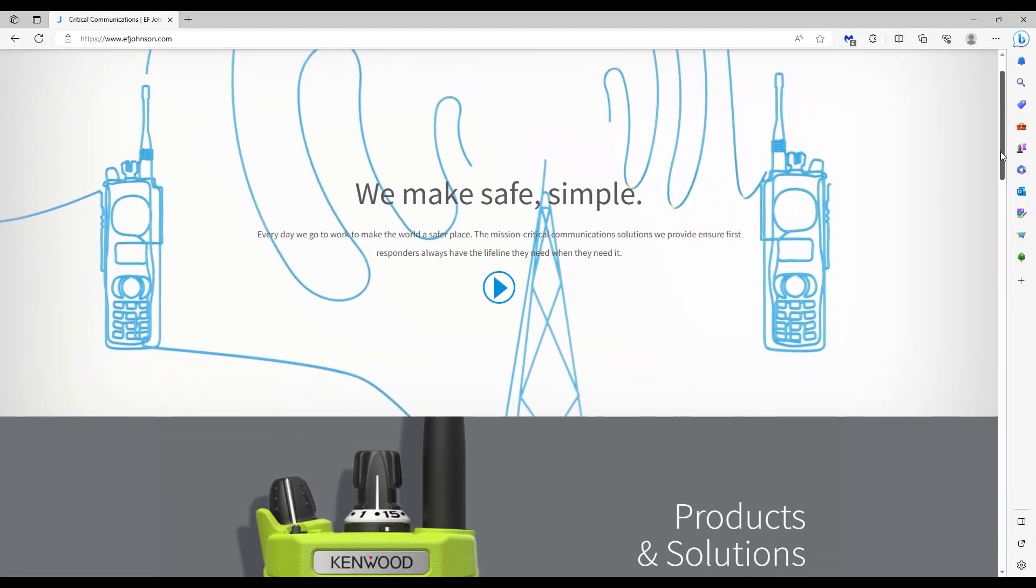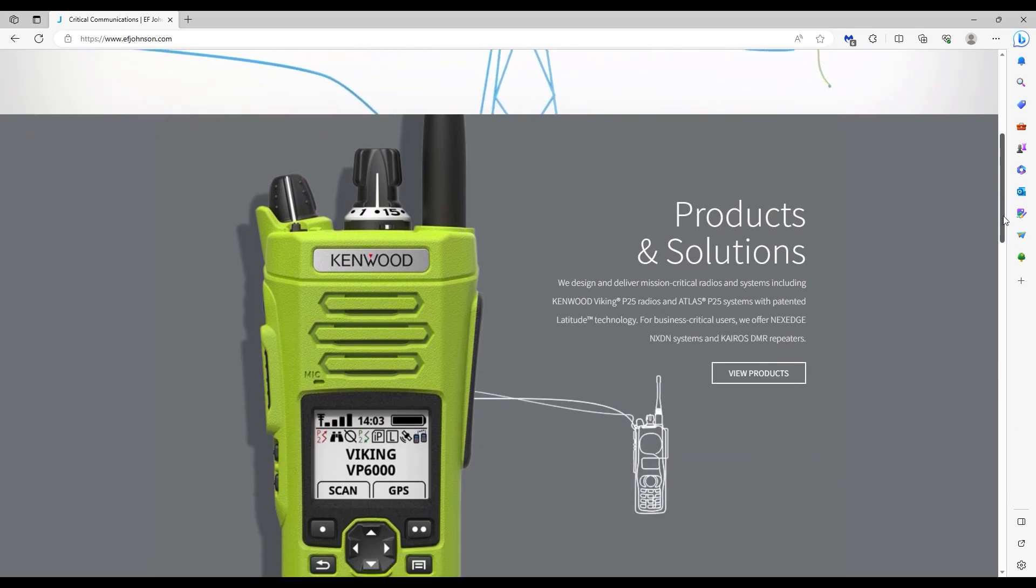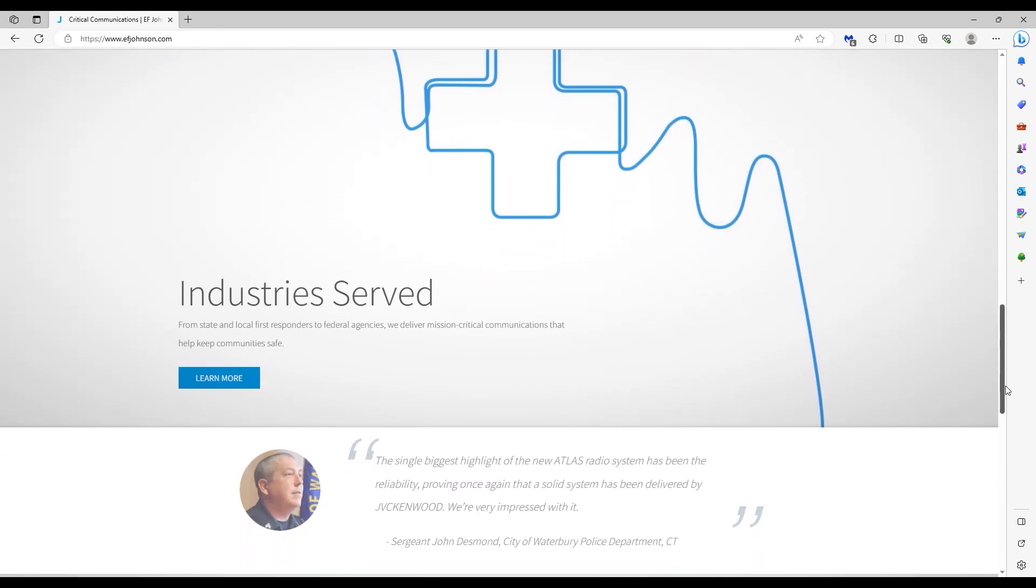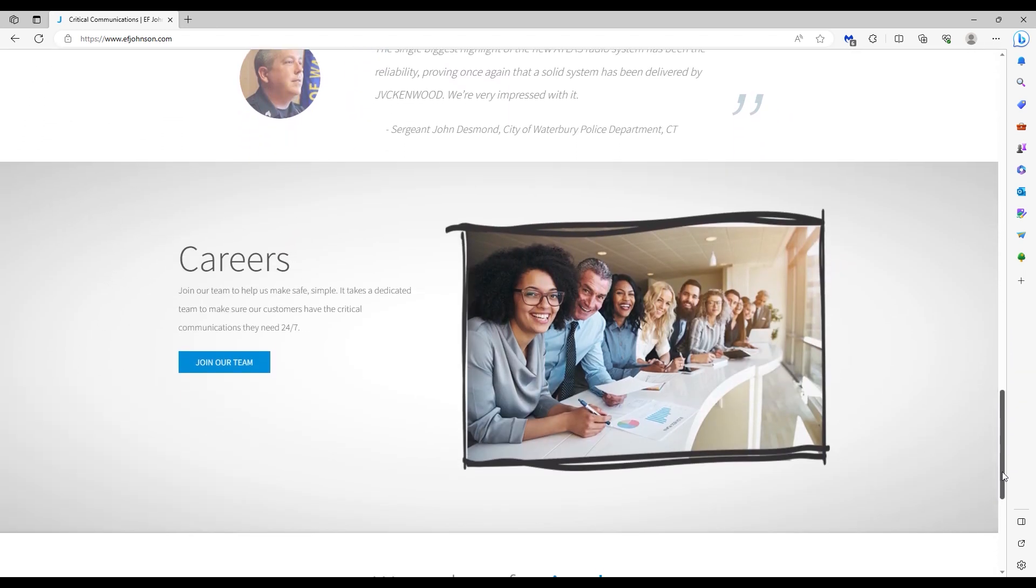EF Johnson is still around today, 100 years after their founding. They're a part of the JVC Kenwood Company and make commercial radios. However, they got out of the amateur radio market decades ago.